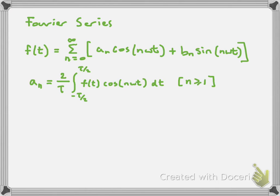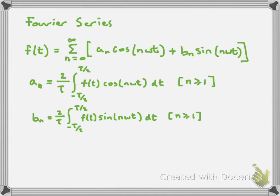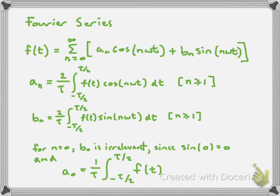For the coefficients of the sine functions, b_n = (2/τ) times the integral from −τ/2 to τ/2 of f(t) sine(nωt) dt, for n ≥ 1. For n = 0, the b_n coefficient doesn't matter since sine(0) = 0, making that term zero. The special formula for a_0 is: a_0 = (1/τ) times the integral from −τ/2 to τ/2 of f(t) dt.